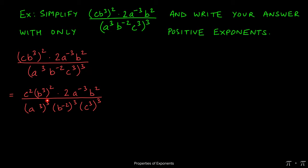So we get a cubed raised to the third, b to the negative two raised to the third, c cubed raised to the third.